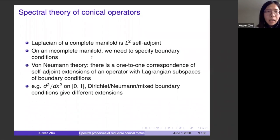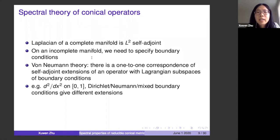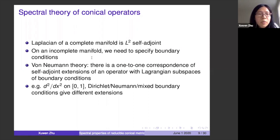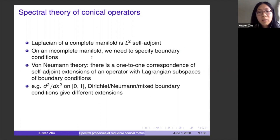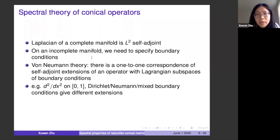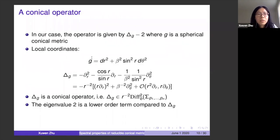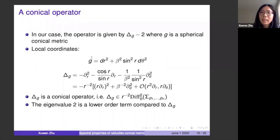Von Neumann theory tells us there is a one-to-one correspondence between self-adjoint extensions of the operator and Lagrangian subspaces of boundary conditions. For example, for d²/dx² on [0,1], different boundary conditions give different self-adjoint extensions with different spectra and eigenfunctions. The same idea applies here: I need to talk about the boundary conditions. In our case there is one classical self-adjoint extension, but also another one that's interesting.